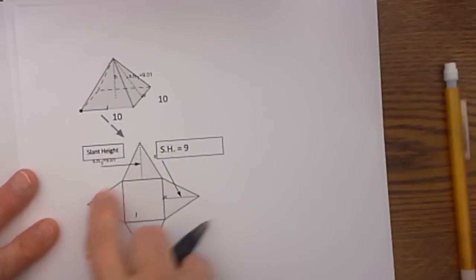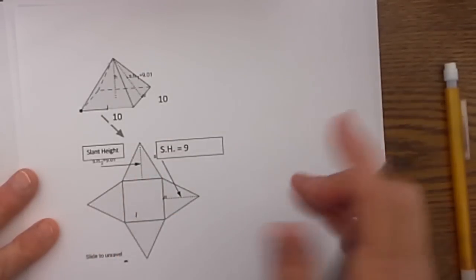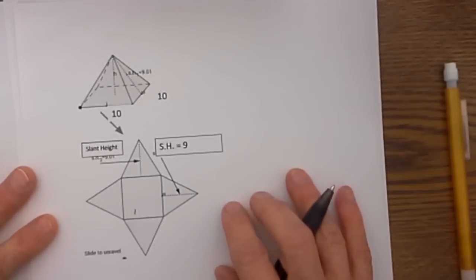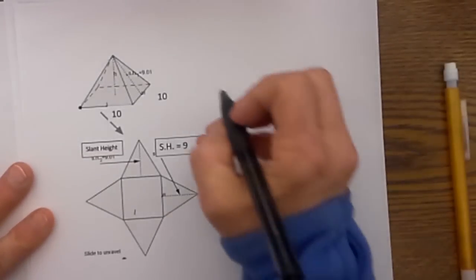So to find the area of four triangles you could find the area of one triangle and then just multiply it by four and you would have the lateral area. But there is a little easier formula for that.